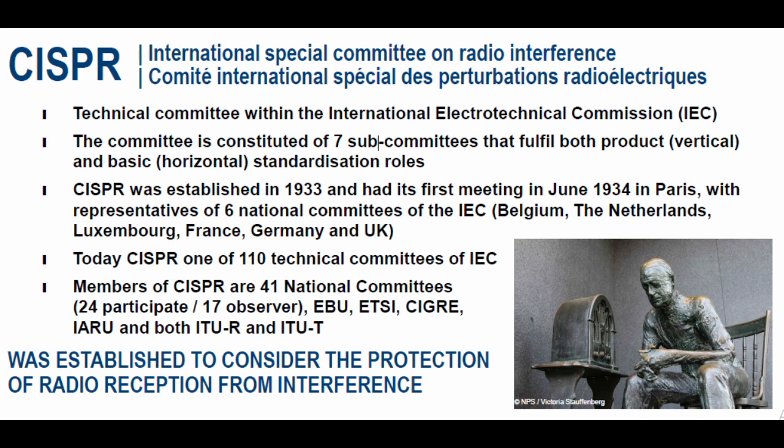CISPR was established in 1933 and had its first meeting in June 1934 in Paris, with representatives of six national committees of IEC: Belgium, the Netherlands, Luxembourg, France, Germany, and UK.